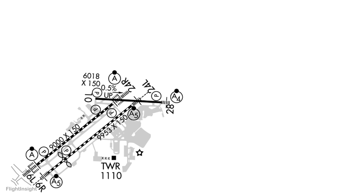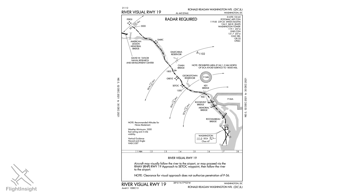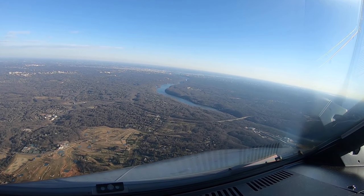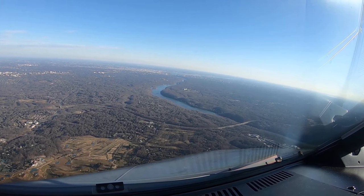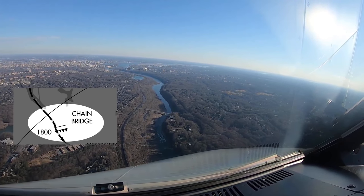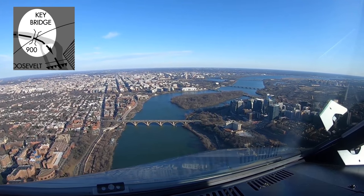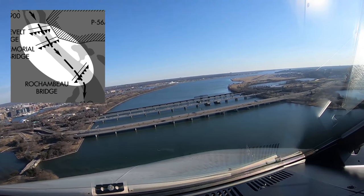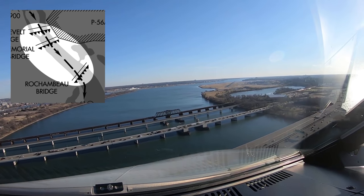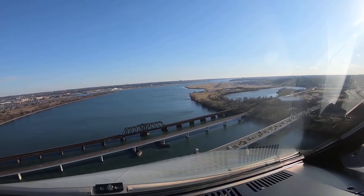Visual approaches don't have procedure charts, but some visual procedures at larger airports — used for environmental or noise considerations — called Charted Visual Flight Procedures do have approach plates. This is the River Visual approach to runway 19 at Washington National. This procedure keeps aircraft landing south at National over the Potomac River to reduce noise on either side and to avoid overflight of the prohibited areas in the capital. The approach plate lists the route to follow, landmarks along the way, and altitudes at specific points. The River Visual concludes with overflight of a series of bridges across the Potomac and an abrupt right turn onto short final after passing the 14th Street Bridge. These charted visual procedures are designed primarily for turbojet aircraft.